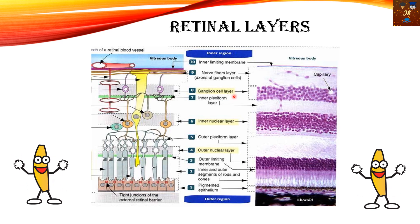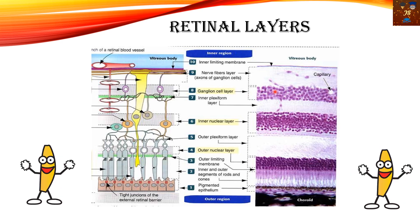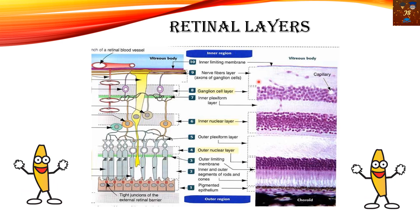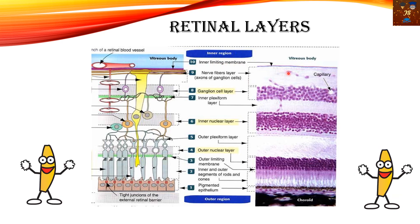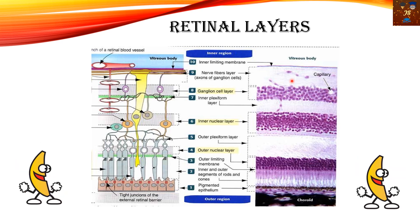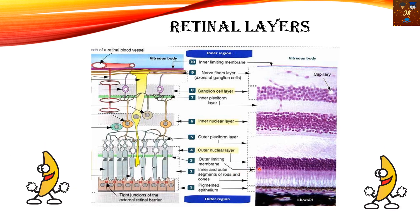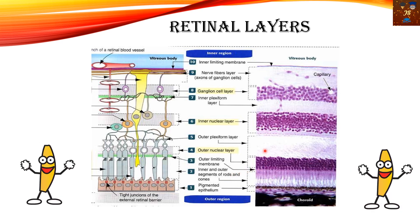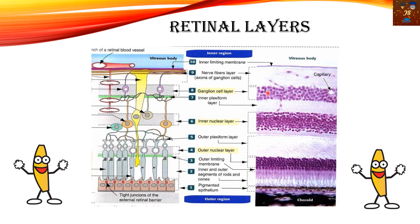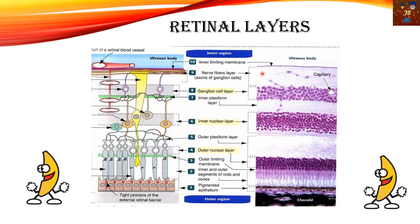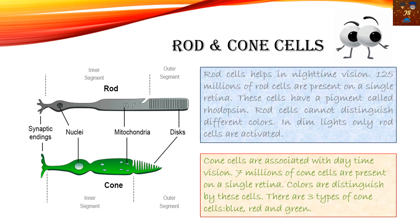Continuing the ten retinal layers: the inner plexiform layer, then the ganglion cell layer — the ganglion cells help transmit signals into the nervous system — then the nerve fiber layer (axons of the ganglion cells), and finally the inner limiting membrane. So the ten layers are: pigmented epithelium, inner and outer segments of rods and cones, outer limiting membrane, outer nuclear layer, outer plexiform layer, inner nuclear layer, inner plexiform layer, ganglion cell layer, nerve fiber layer, and inner limiting membrane.